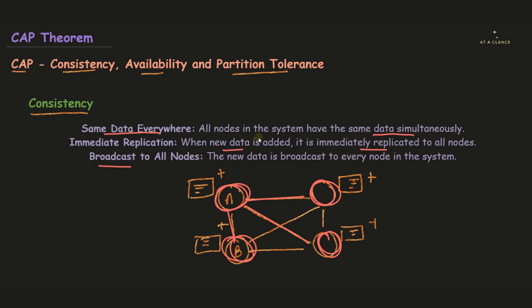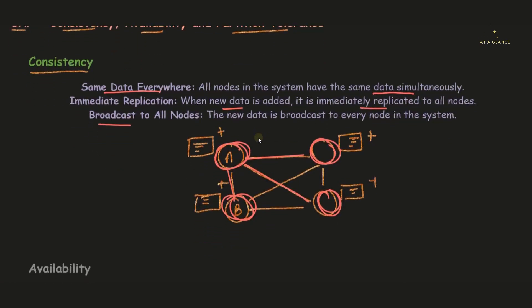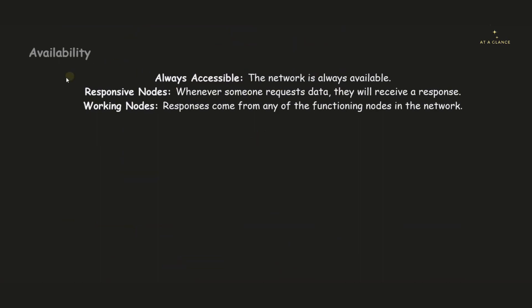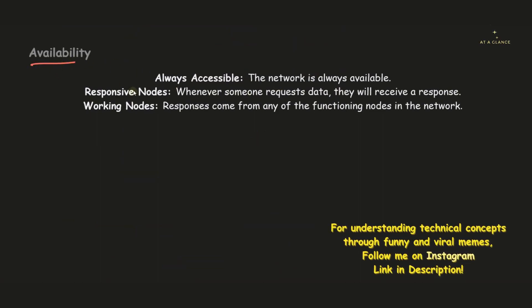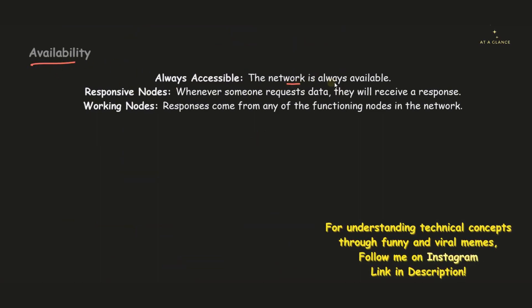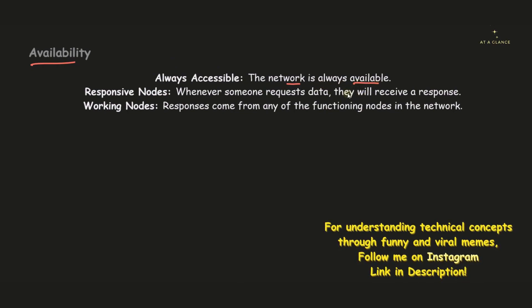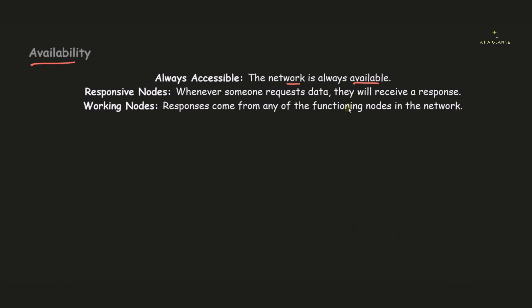Now let's move on to the next letter in CAP theorem — 'A', which stands for Availability. Availability ensures that the network is always available whenever any request is made to the node. The node has to give a response with the required data. Availability ensures that every single node is responsive — whenever someone requests data, that data will be made available through a response from that node.